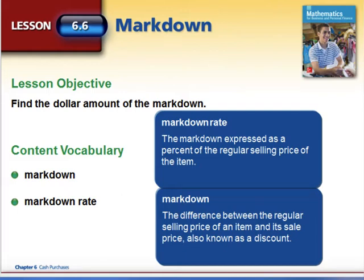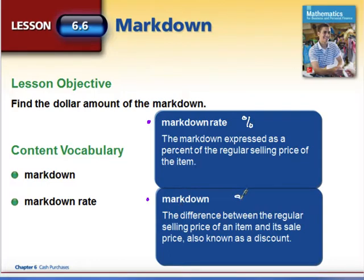This lesson is going to talk about markdowns when you're using percent off coupons in stores. The markdown rate is the actual percentage that you're saving — so maybe you have a 10% coupon or a 25% off coupon; those represent your markdown rates. The markdown rate is the percentage, and the markdown is the actual dollar amount that we're taking off the original price.